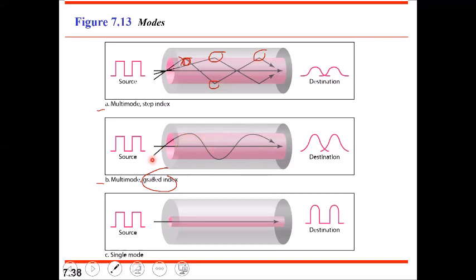When light propagates in graded index, it travels in a smoother curve because it gets partially reflected at every little point as the density is not uniform. It does not move in a straight path since the density is continuously changing. This is the key difference between step index and graded index: in step index the core density is uniform, but in graded index the center of the core has the highest density and it reduces towards the core-cladding interface.